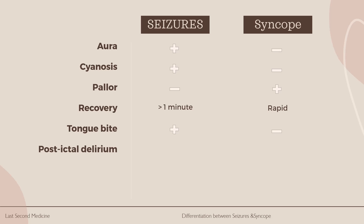Number 6: Post-ictal delirium. Altered behavior and impaired cognition after regaining consciousness is featured in seizures but not in syncope. Number 7: Post-ictal amnesia. Lack of memory about events prior to loss of consciousness is seen with seizures.